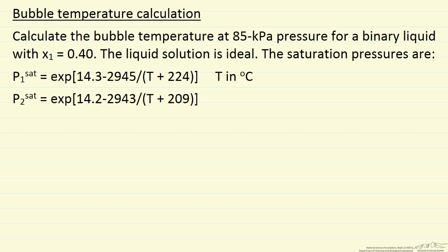In this problem we're going to calculate the bubble temperature for a liquid. We know the composition, we know the total pressure, and we're told it's an ideal liquid, meaning the molecules are similar, for example, hexane and octane mixed together. We're given saturation pressures as a function of temperature, essentially Antoine equations.